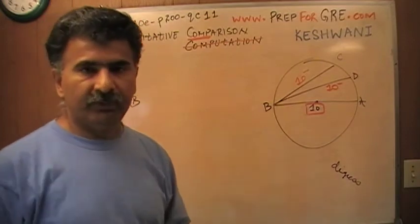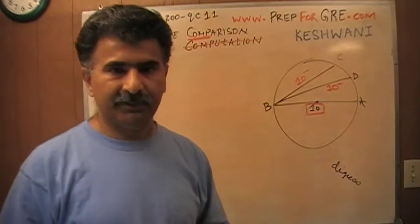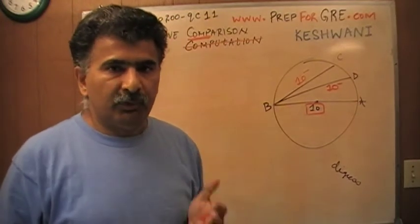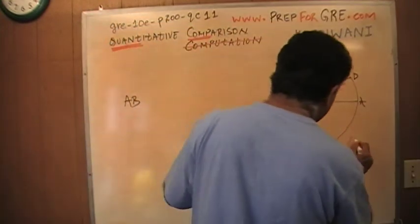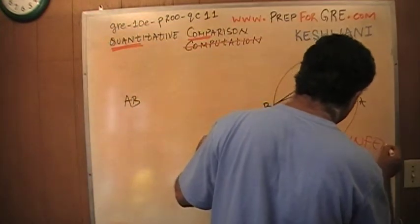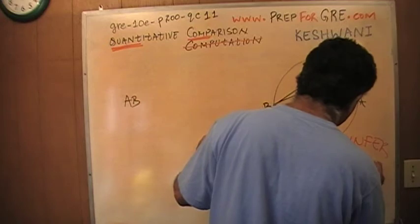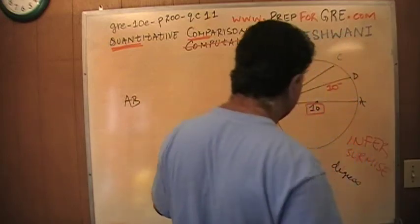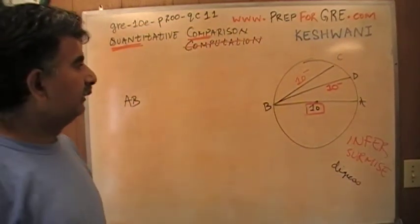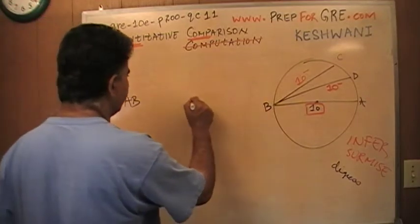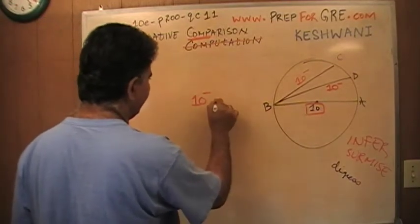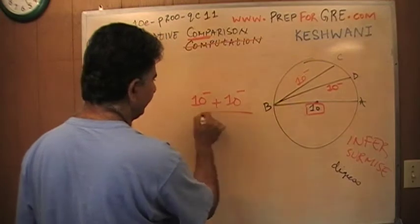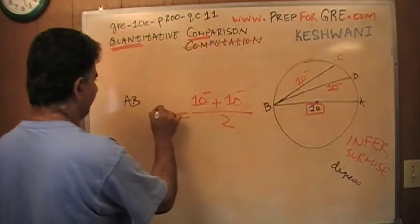So if I take the average of two numbers and both of which I'm telling you are less than 10, what do you infer, what do you surmise? If I take the average of two numbers, this number is less than 10, this number is less than 10. If I take their average, that average is going to be less than 10.